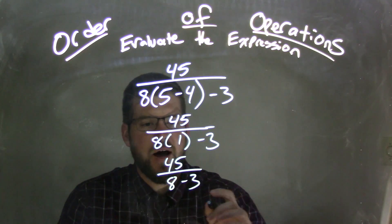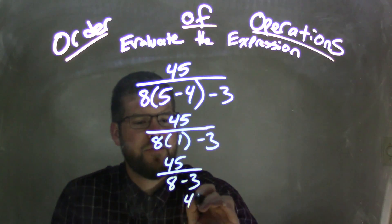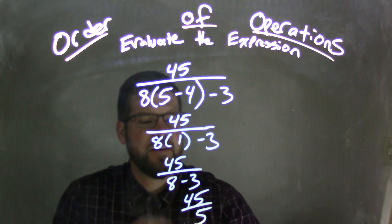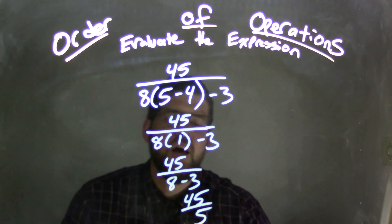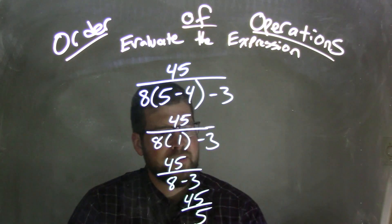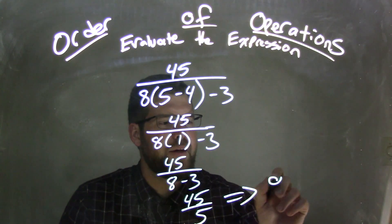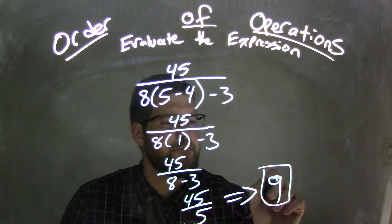8 minus 3 is 5, so we have 45 over 5 here. And 45 divided by 5, what does that come out to be? That comes out to be 9.